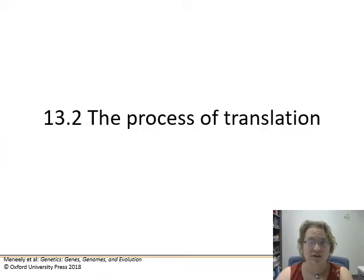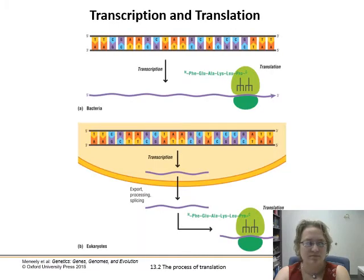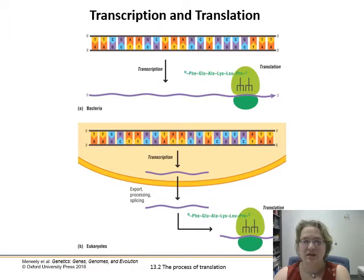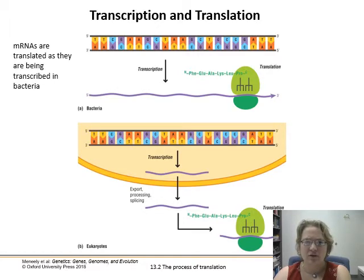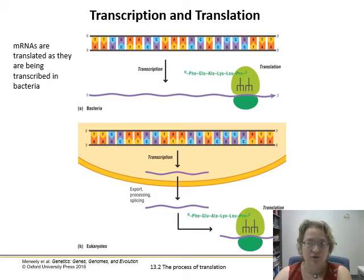So first off, the process of translation. Like in transcription, there is a slight difference between what happens in eukaryotes and prokaryotes, but it's less complicated than in transcription. Translation in bacteria: mRNAs are translated as soon as they are transcribed. Ribosomes are right there next to the chromosomes and they just hop right on and go along their merry way.